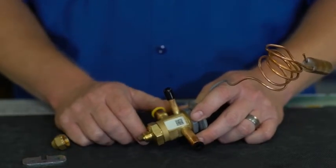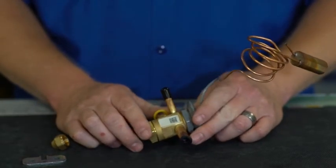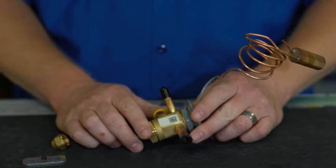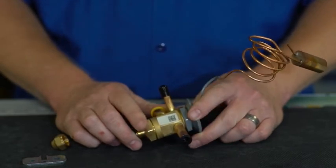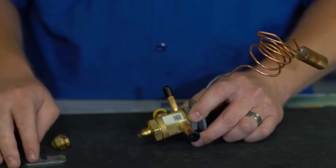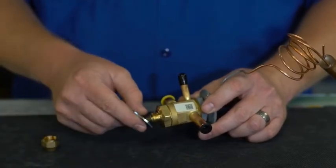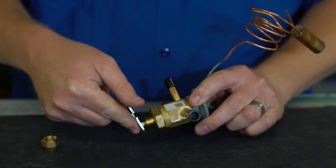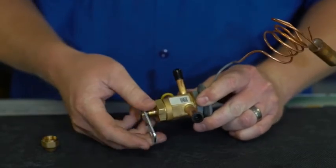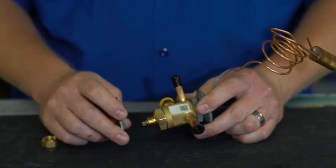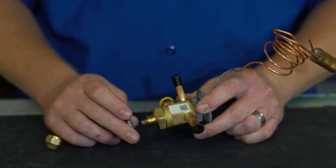You take a measurement of the operating superheat to establish if change would be beneficial. Remember, to reduce the superheat, turn the adjustment stem counterclockwise, and to increase the superheat, turn the adjustment stem clockwise.